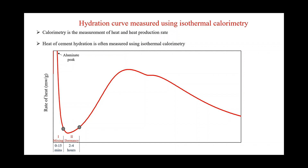The next stage is called the dormant stage, which lasts for about two to four hours, during which not much reaction occurs. The reason is that the ettringite formed covers the cement grains. During this period, the concrete or cement paste remains in a plastic stage, which gives time to work with it.